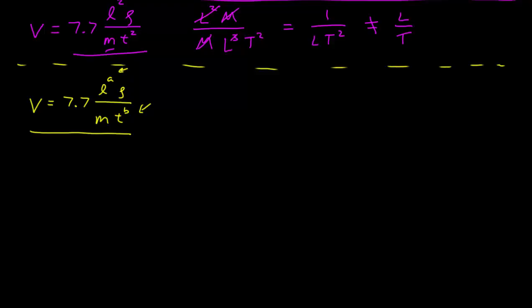Now you can use dimensional analysis to find this. On the left hand side we have a velocity, and that's a length per time. On the right hand side we have this length to the power a. We have a density, that's a mass over length cubed. We have this mass, there's a mass, and then a time to the power b.